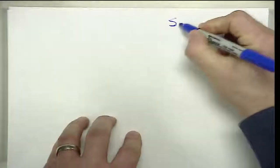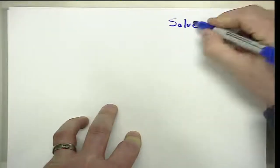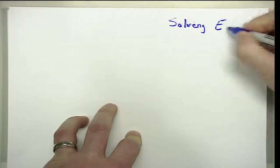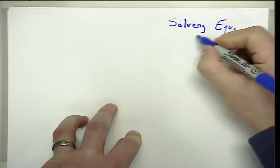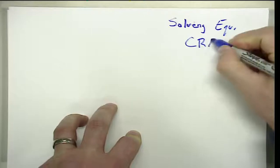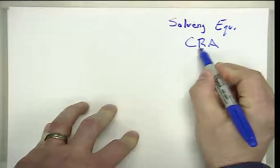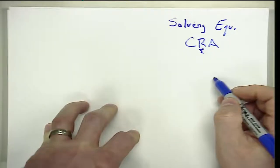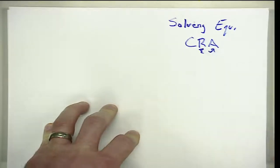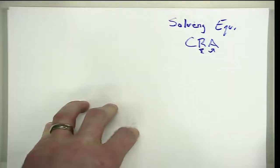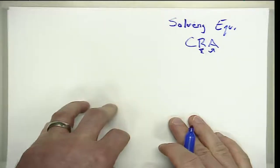In this video we're going to take a look at solving equations in connection with a CRA sequence of instruction. Specifically, we're going to look at the representation - how we would draw the model and how that connects or how we track that work in the abstract while we're working on it.